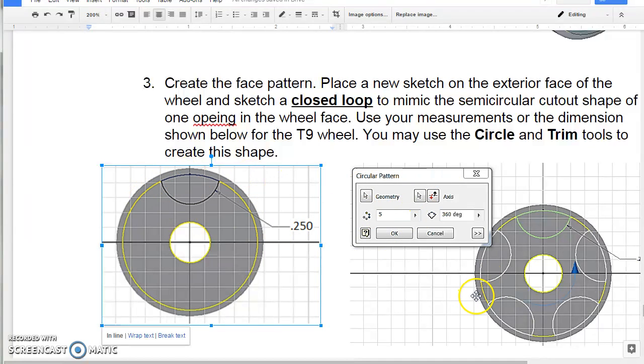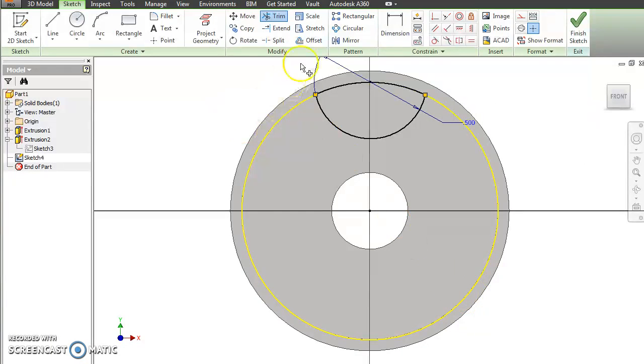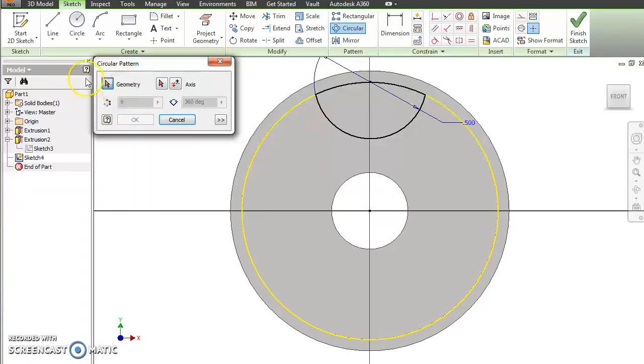So now we need to do circular pattern. Really the hardest part there is finding it, and it's here under pattern. And then you'll go circle. And the first thing it's going to ask you is to select the geometry. So I'll click the arrow, and I want to circular pattern. Oops, I turned it off. Select the two arcs. So that's what I want to pattern.